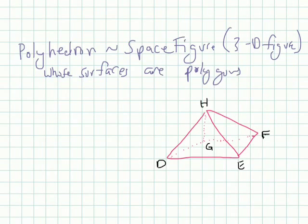And what do I mean by this? Well, in this example, you can see that the surfaces, so that would mean triangle HDE. And we'll learn a technical word for this, but all these surfaces are polygons. An example that would not be a polyhedron would be an organic shape. That might be 3D, but this is not a polygon.